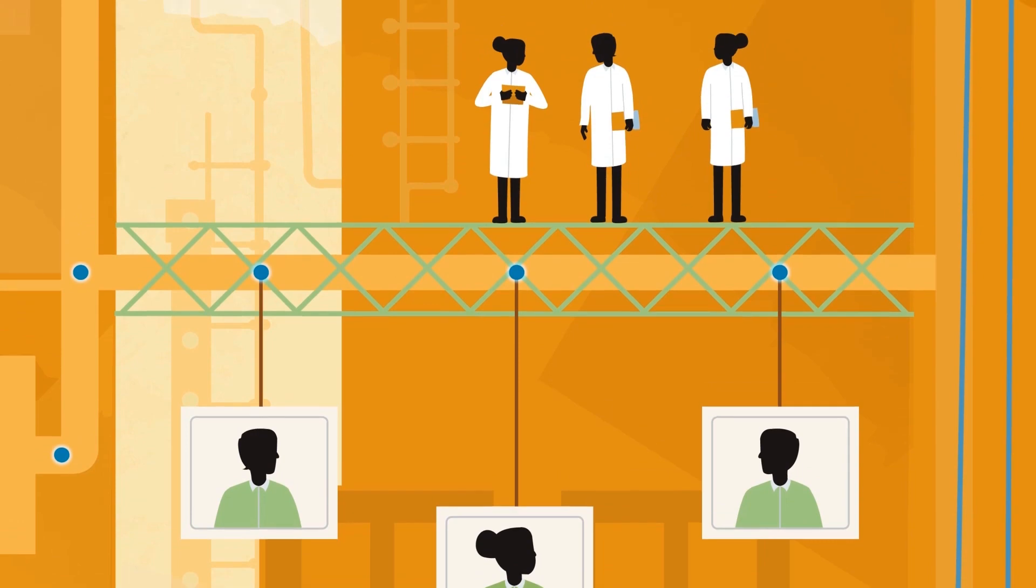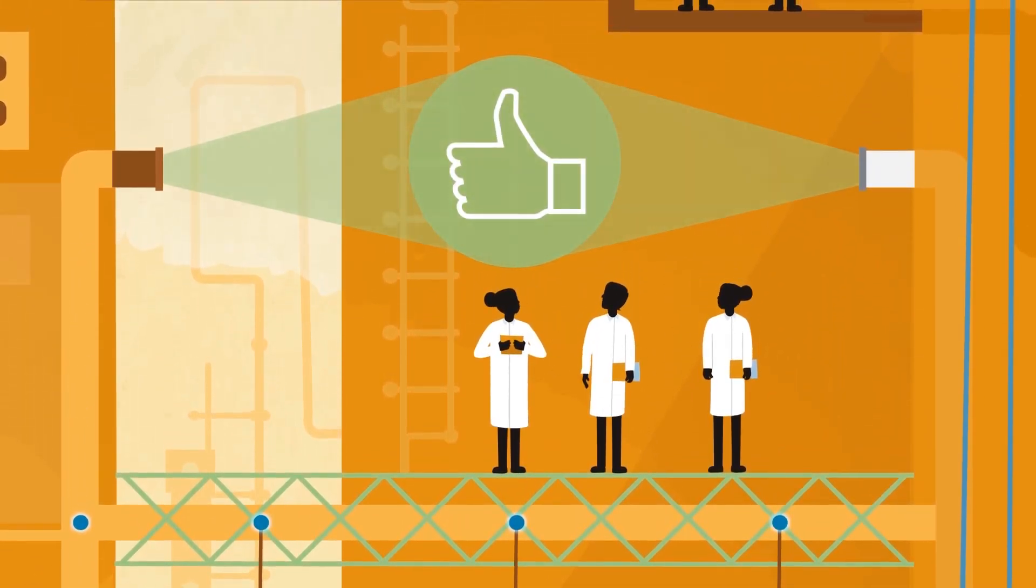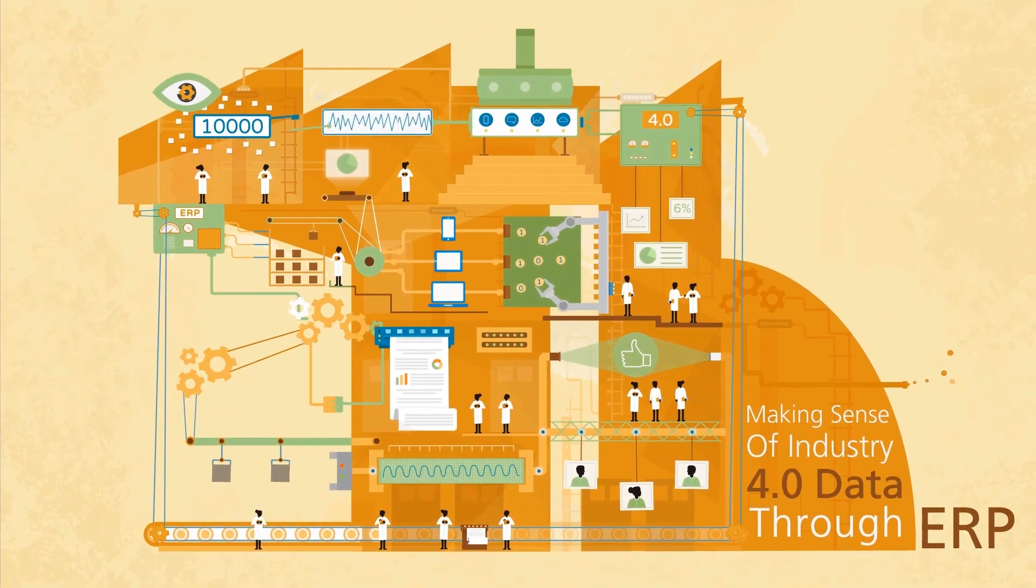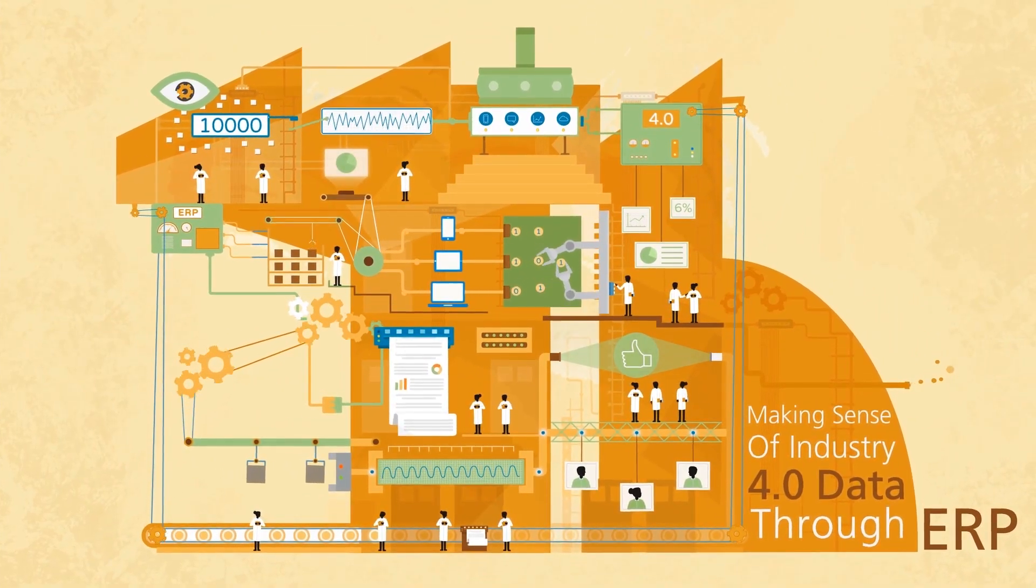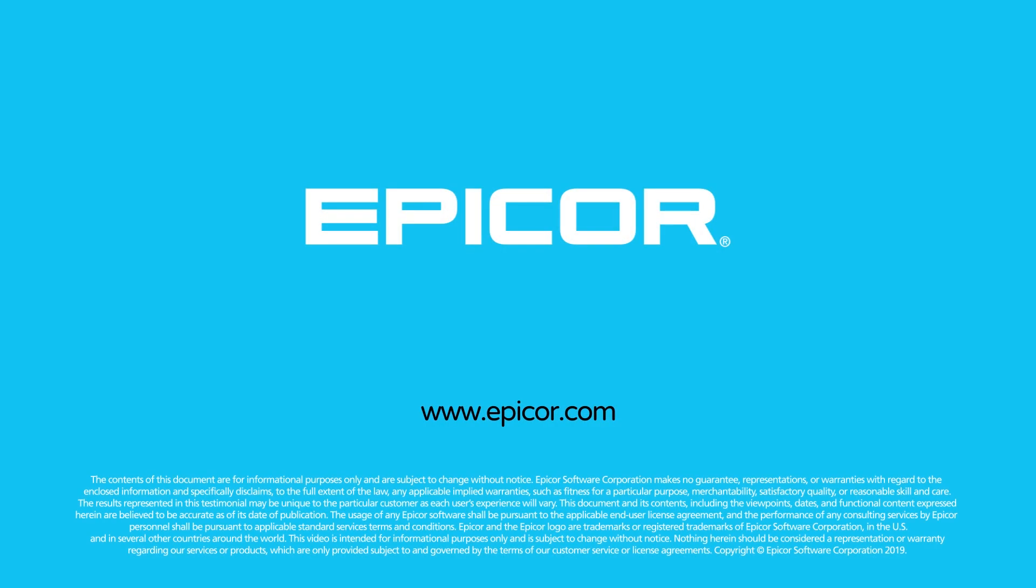With an ERP system that delivers this, manufacturers can check off a big box on their Industry 4.0 readiness checklist and make good on the promise of real-time, actionable intelligence.